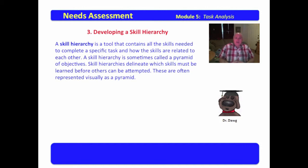Now, a skill hierarchy is a tool that contains all the skills needed to complete a specific task and how the skills are related to each other. Skills hierarchy is sometimes called a pyramid of objectives. Skill hierarchies delineate which skills must be learned before others can be attempted. They're often represented visually as a pyramid.